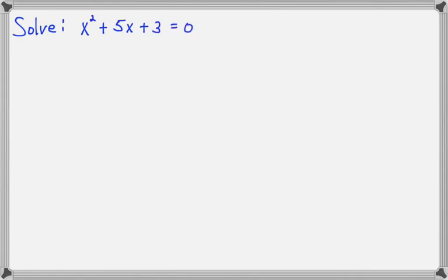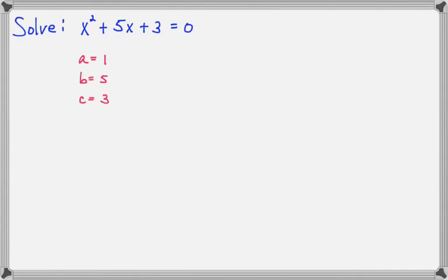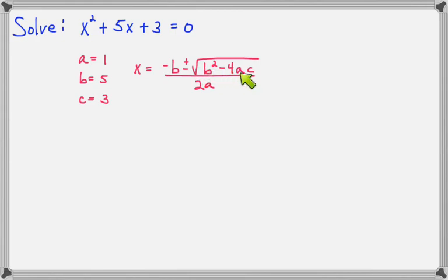So here's our first example: x squared plus 5x plus 3 equals 0. If you look at a quadratic equation and decide it cannot be factored, and the square root property is not a good approach, then you can start working on a, b, and c. In this case, a is 1, b is 5, and c is 3. Now we're going to put x equals negative b plus or minus the square root of b squared minus 4ac all over 2a, and plug our a, b, and c straight into this quadratic formula.